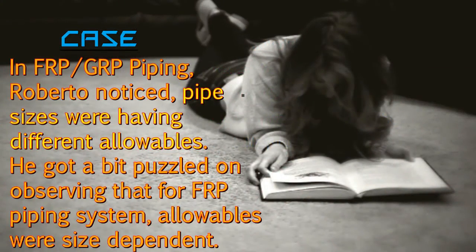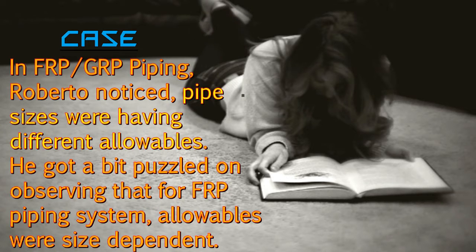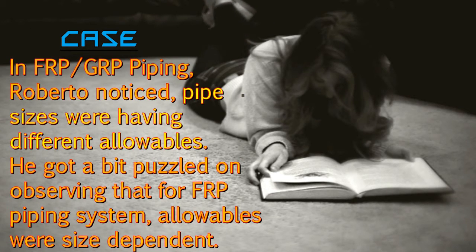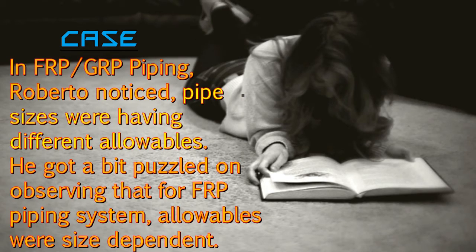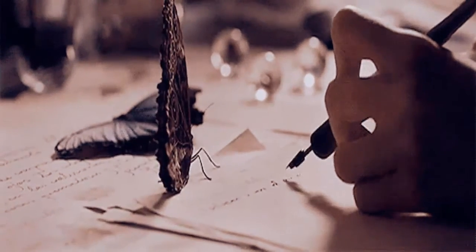Further, let's look into another case. In FRP/GRP piping, Roberto noticed that pipe sizes were having different allowables. He got a bit puzzled on observing that for an FRP piping system, allowables were size dependent.